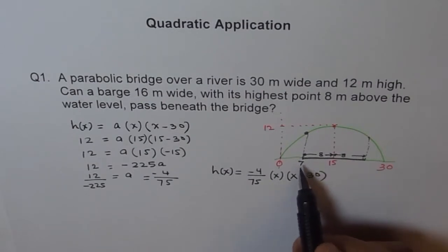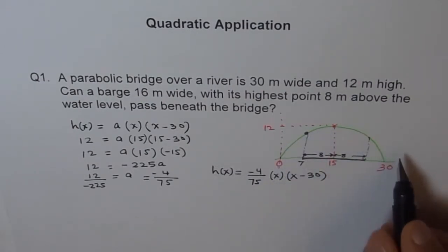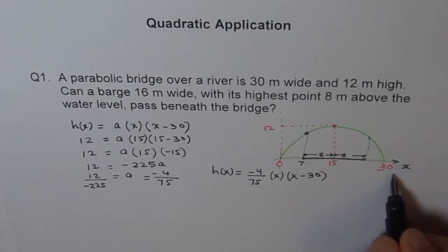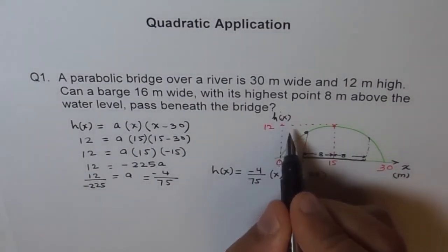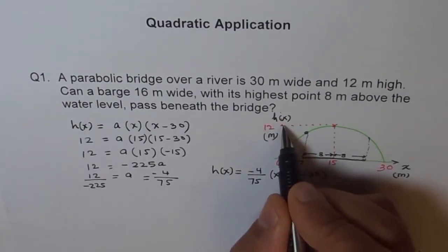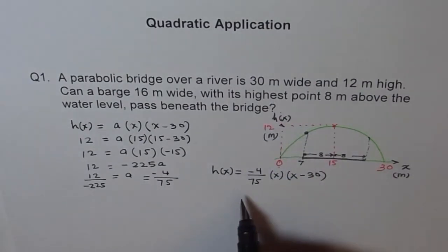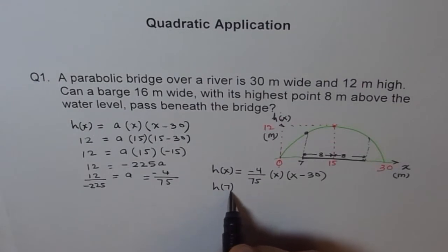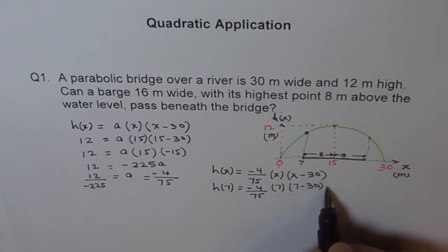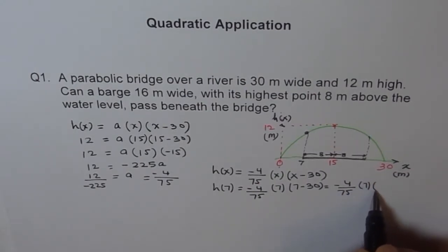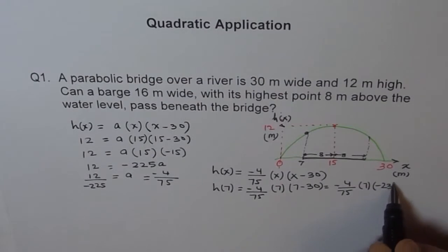Now, the problem reduces to finding H at 7. We have already found this parabola. This is distance in meters and this is height in meters. At 7, so we will say H of 7 is equal to minus 4 over 75 times 7 times 7 minus 30, which is minus 4 over 75 times 7 times minus 23.